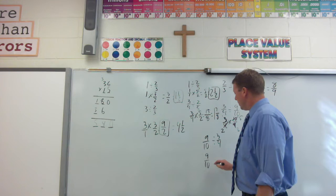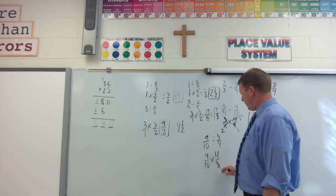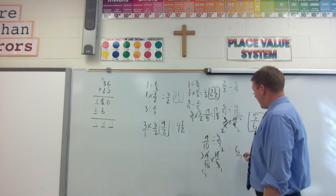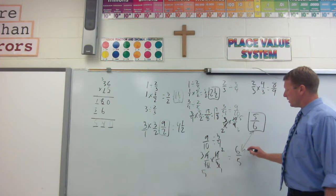I wrote the problem backwards by mistake. Doesn't make a difference. It stays the same, changes to multiplication, flips over, canceling the same things. Canceling the same things. Multiplying the top, multiplying the bottom, and we remember when I change the order, I get the reciprocal.